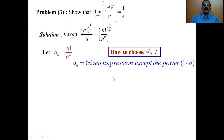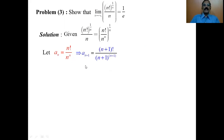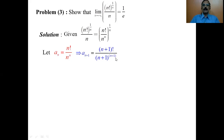Next we have to write a_{n+1}. To get a_{n+1}, simply replace every n by n+1 in a_n. Therefore n factorial becomes n+1 factorial, and n to the power n becomes n+1 to the power n+1. Now we have to find the ratio a_{n+1} by a_n.